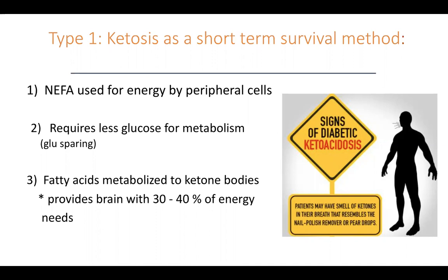This is good because it's glucose-sparing, and any glucose that we do have can be utilized for metabolism. We can't get glucose into the majority of cells — muscle, etc. — without insulin. The problem is the longer we utilize fatty acids, more and more of them will be converted to ketone bodies, which allows us to survive a long time. The brain can use ketone bodies.